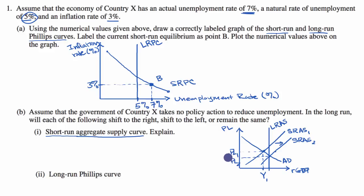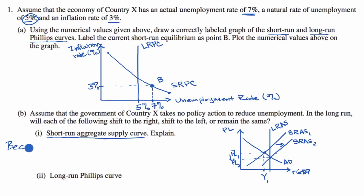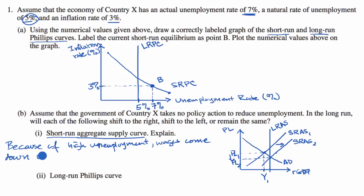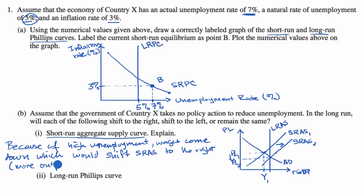Because of high unemployment, downward wage pressure causes wages to come down, which shifts the short-run aggregate supply curve to the right. You would have more output at a given price level, or equivalently, at a given output level you would have a lower price level.